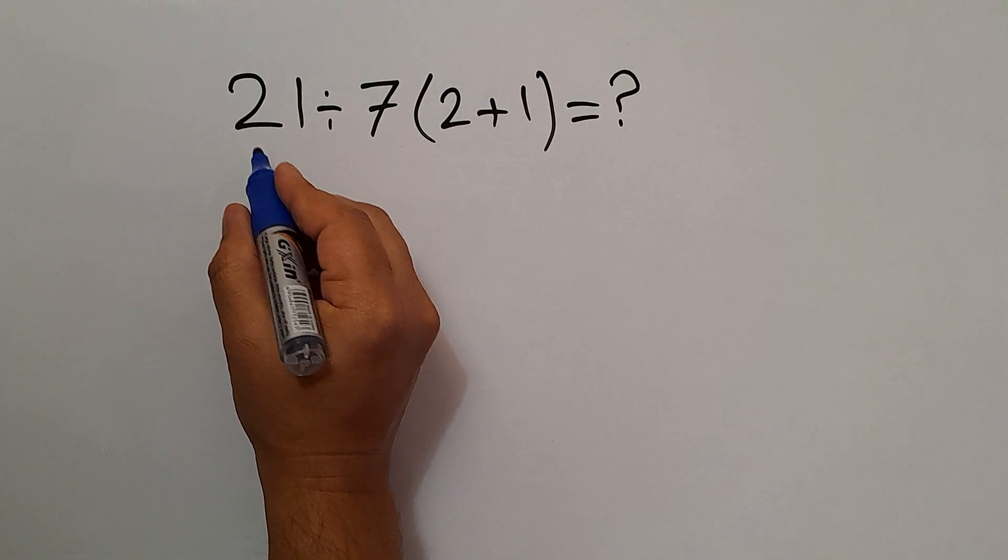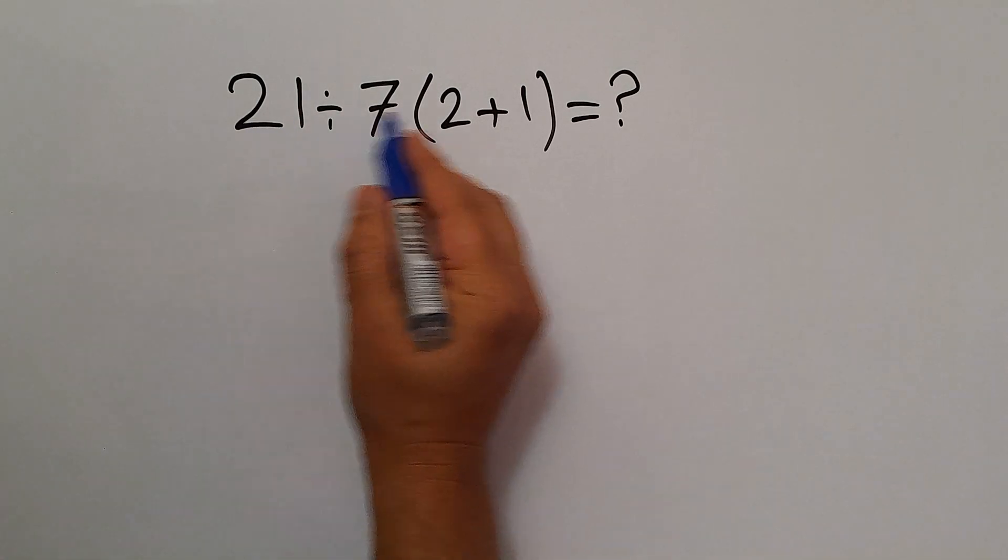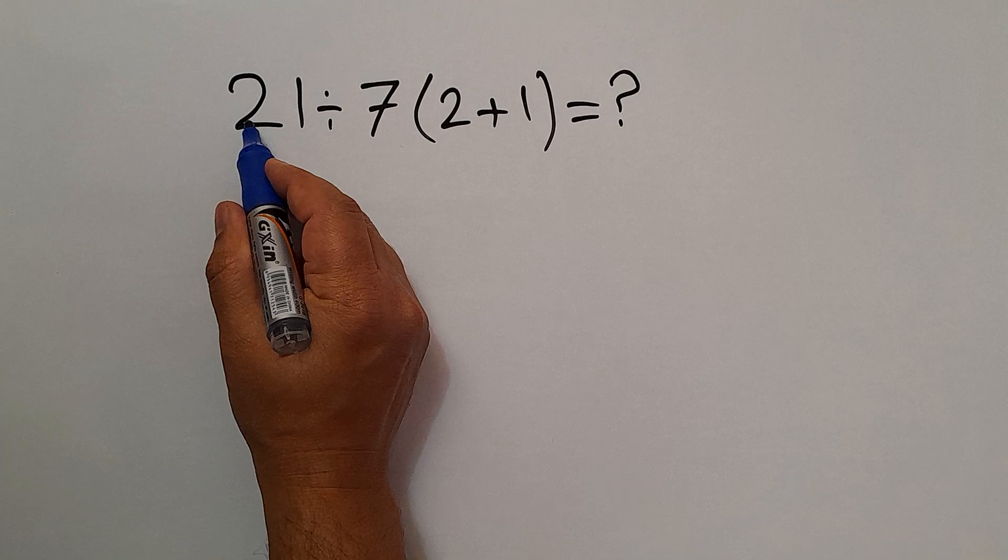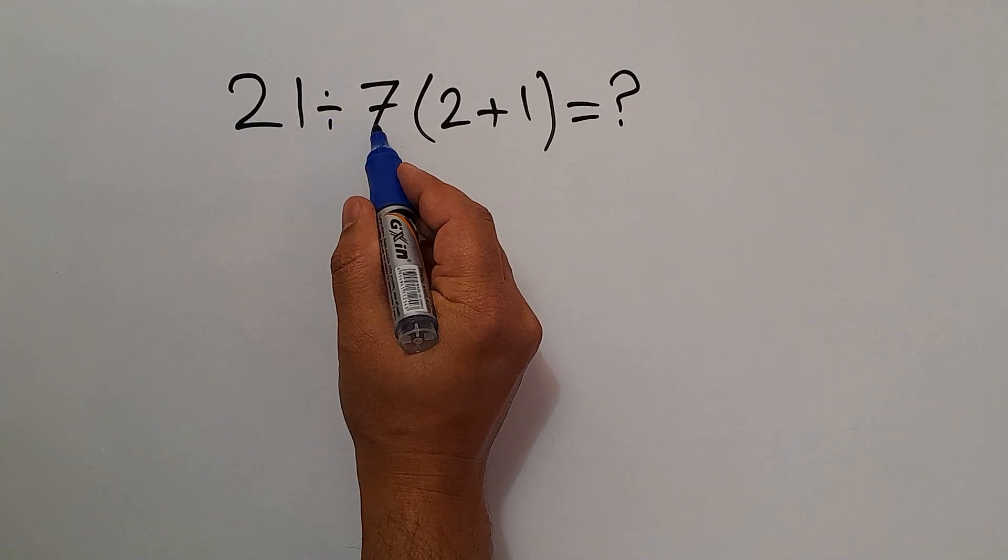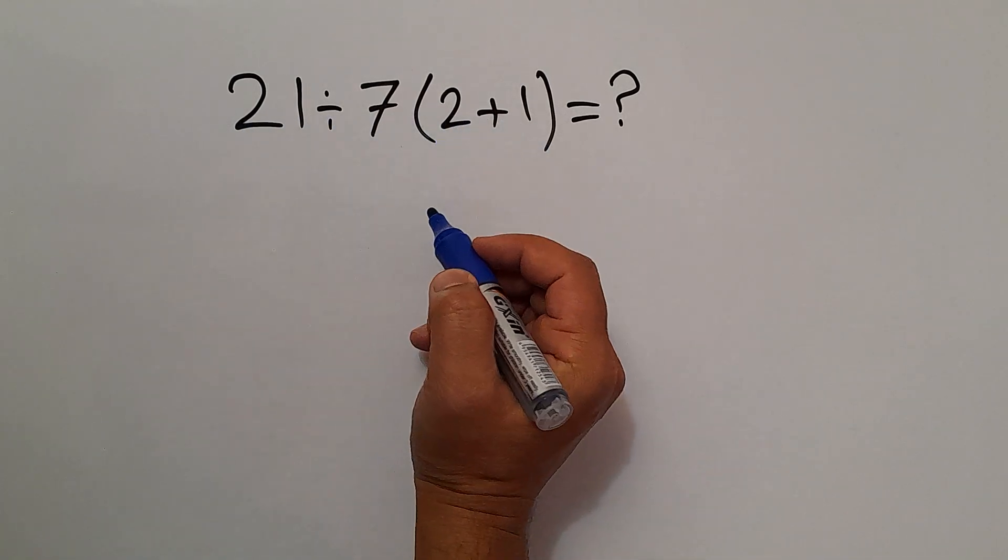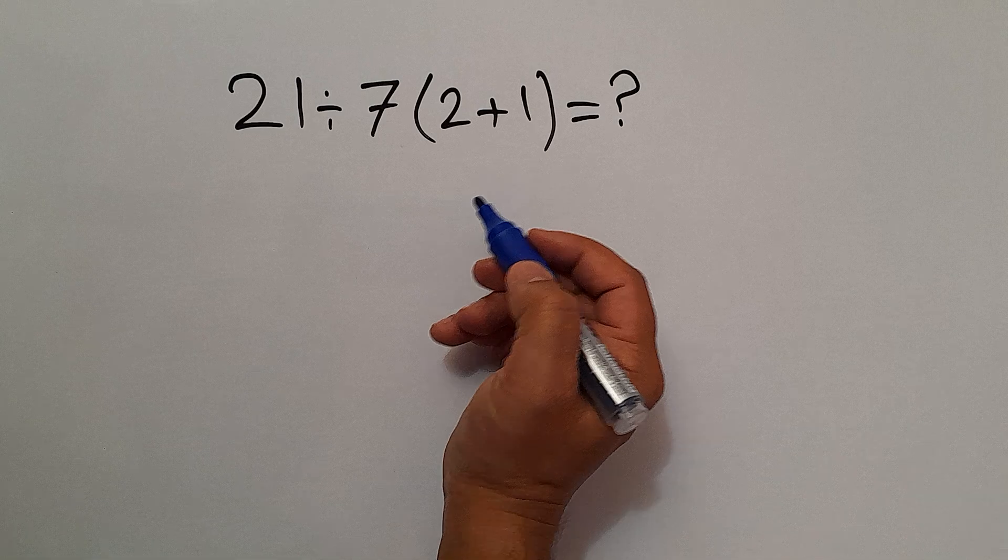Hi everyone and welcome to this video. In this video we want to find the value of this expression which is 21 divided by 7 then times 2 plus 1. Are you ready to solve? Let's go and get started.